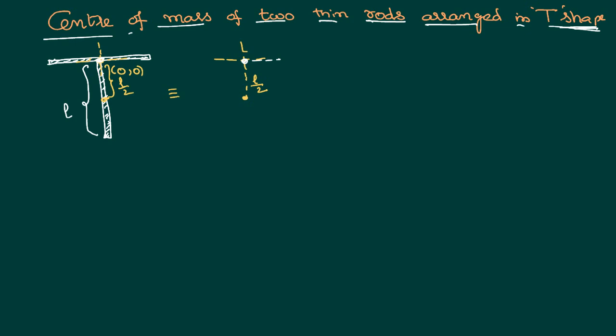So our diagram will become an equivalent diagram like this where instead of the two rods I can imagine two points: one point is at the origin, other point is hanging down at a distance of L by 2. Now I would like to say the mass of that system is equal to...